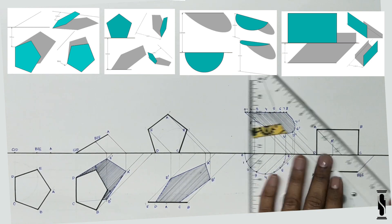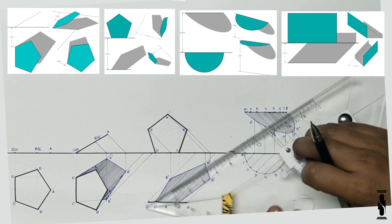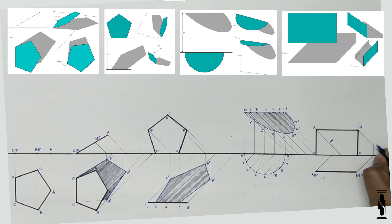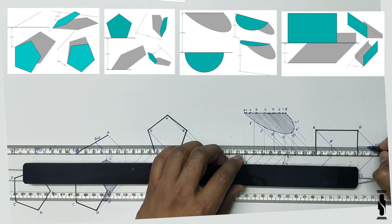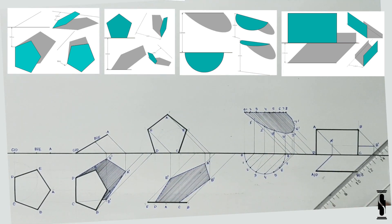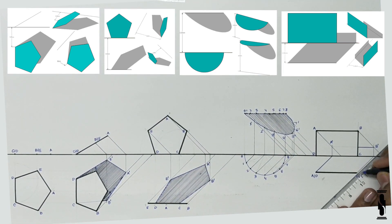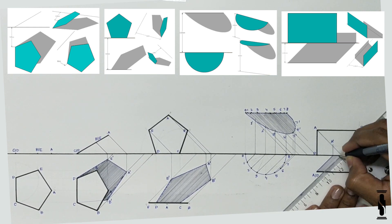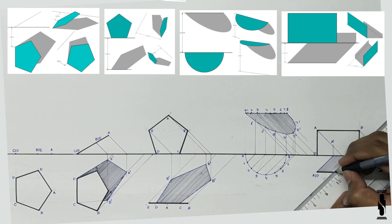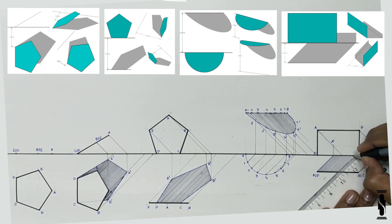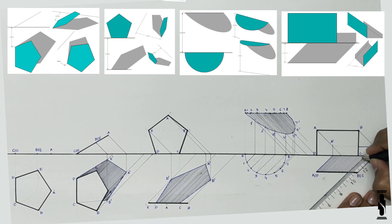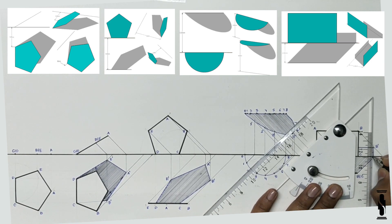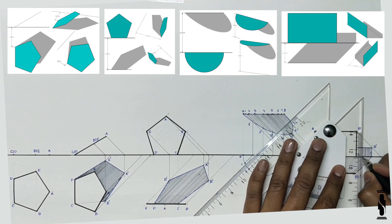Now repeat the same process for point B, and join the points D, A dash, B dash, C in the direction of the light rays to get the final shadow profile of the plane, and hatch it with the light intensity line. As you can see, some part of the shadow is hiding behind the plane, so there is no need to hatch that portion. So that's all about sciography of plane. I hope it will be helpful to you.